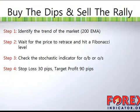Once you identify the trend of the market, you wait for the price to retrace and hit the Fibonacci retracement level. The best levels will be the Fibonacci 0.382, 0.5, and 0.618 — these are very strong support and resistance levels.